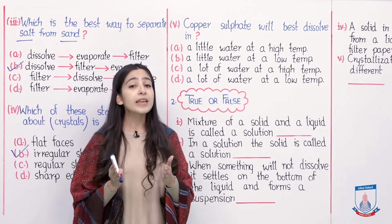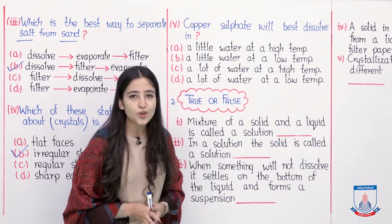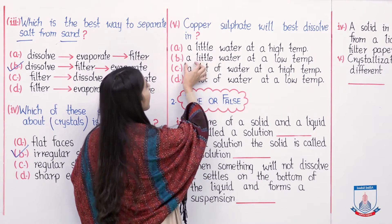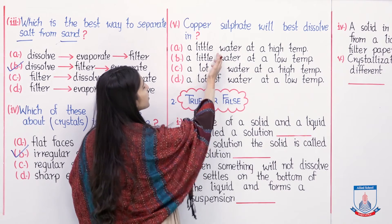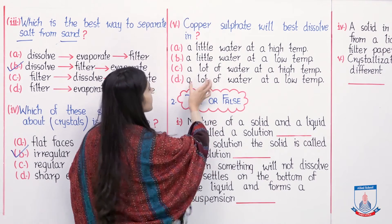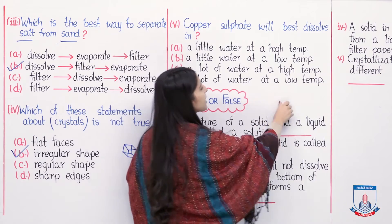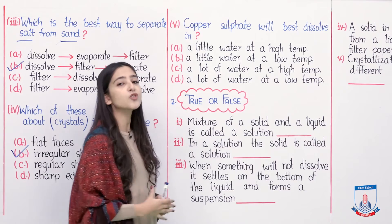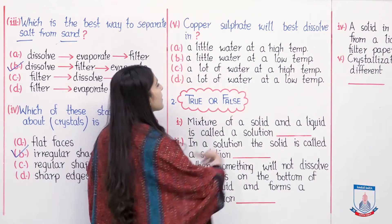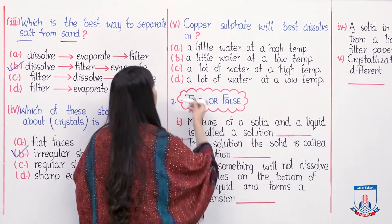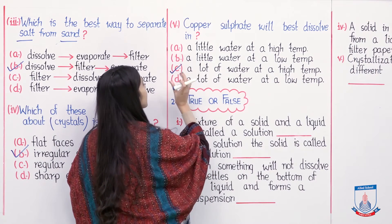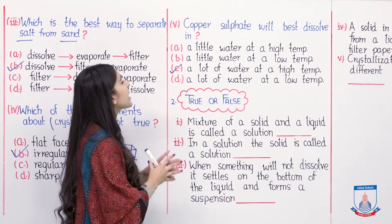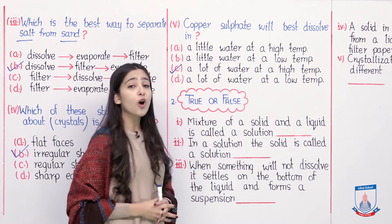Solubility is greater at higher temperature, and solubility is greater with more solvent. So when there is more water and higher temperature, copper sulfate will best dissolve. High temperature is the correct condition, and a lot of water is the correct amount. So we will mark option C as the correct answer: a lot of water at a high temperature will make copper sulfate dissolve the most.